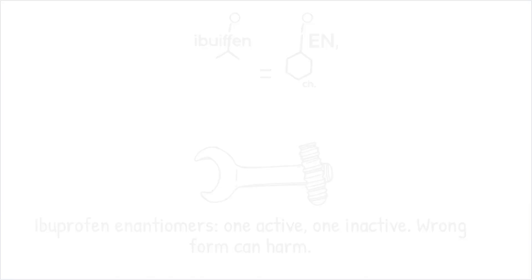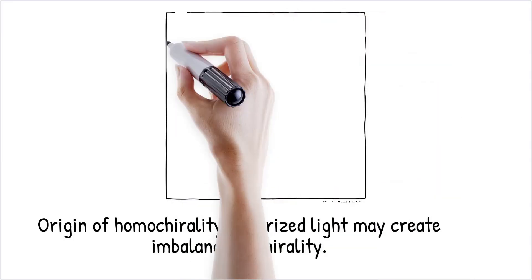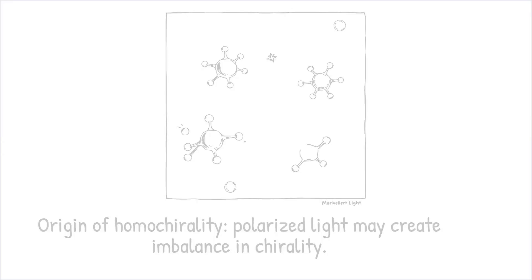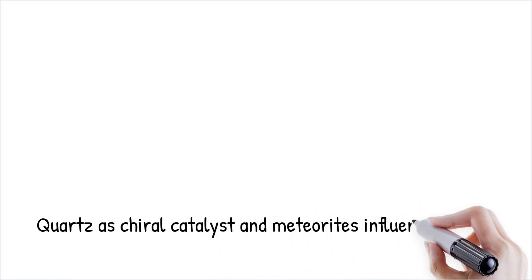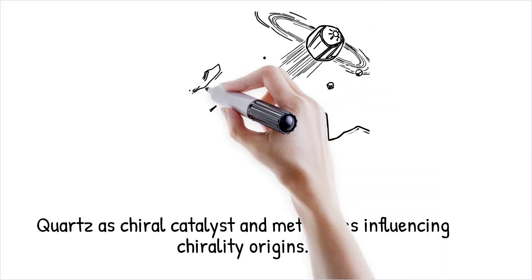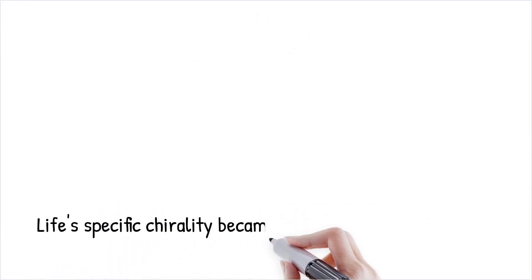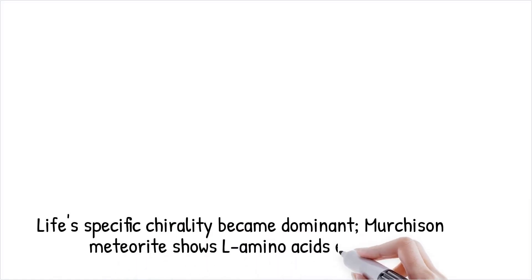The origin of homochirality is a mystery in science. It is hypothesized that a small initial imbalance in chirality could have been amplified by environmental factors or chemical processes. Possible explanations include: polarized light—ultraviolet light from stars can preferentially destroy one enantiomer, creating a slight excess of the other; chiral catalysts—certain minerals like quartz can catalyze reactions that favor one chirality over the other; and extraterrestrial origins—amino acids delivered by meteorites often show a slight preference for one chirality, suggesting the influence of space chemistry. Once life began using molecules of a specific chirality, it became self-reinforcing, as systems using mixed chirality are less efficient.